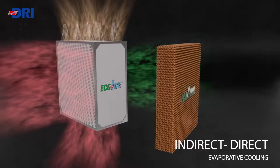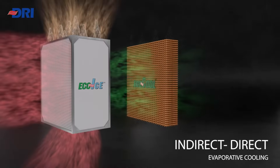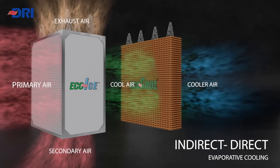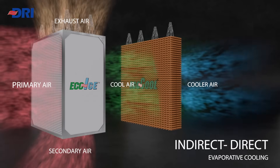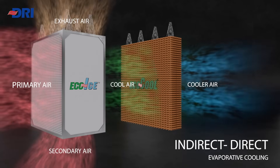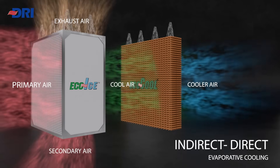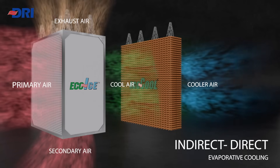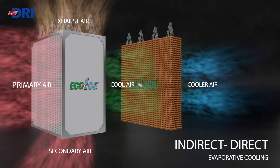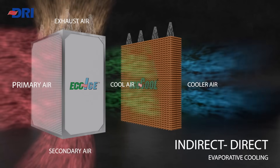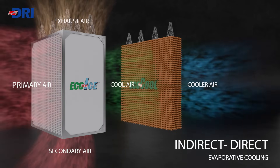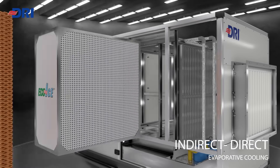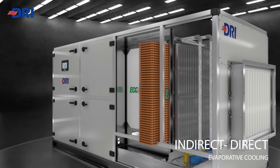The now-cooled and dry primary air then enters the direct evaporative cooling stage. Here, it passes through specially designed wet cooling pads, where a second stage of natural evaporation brings the temperature down even further, still using 100% fresh air.